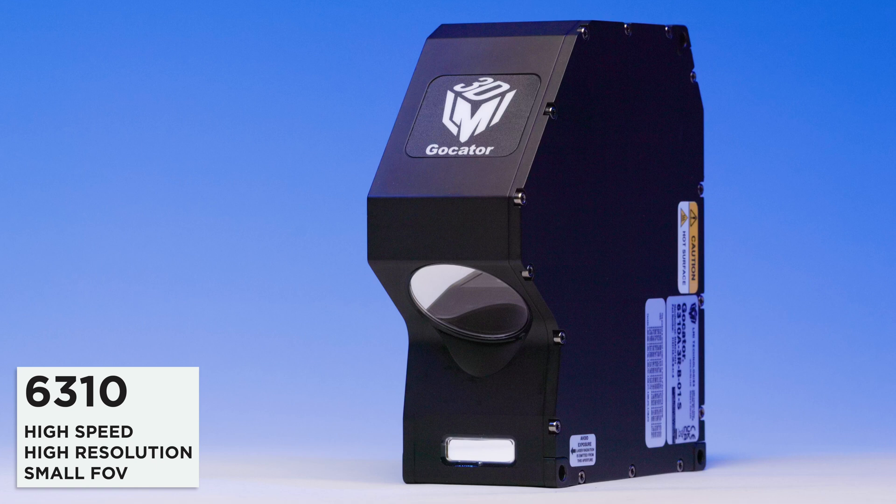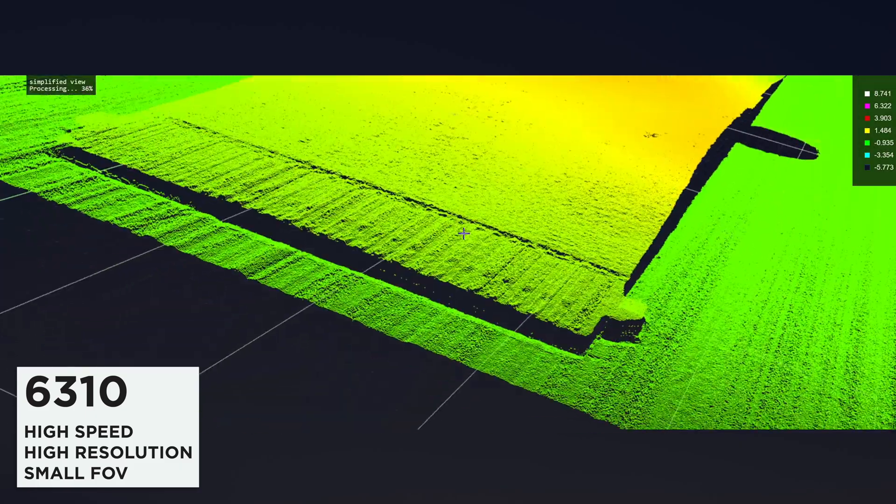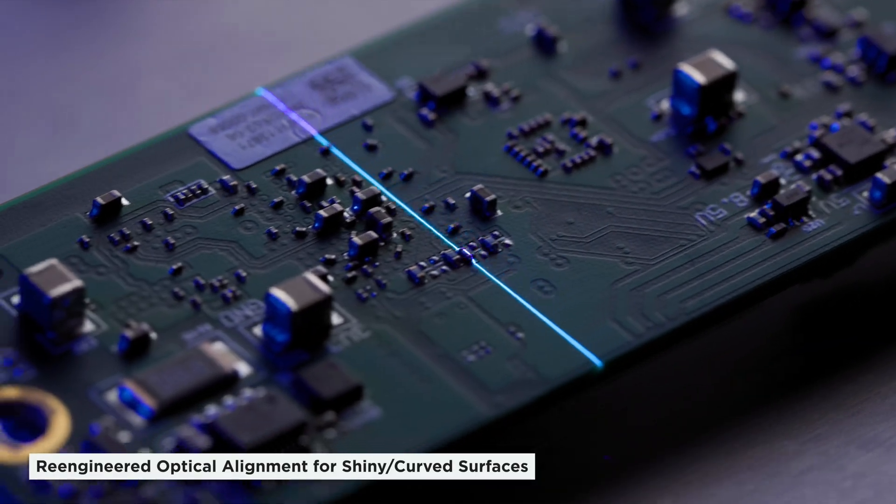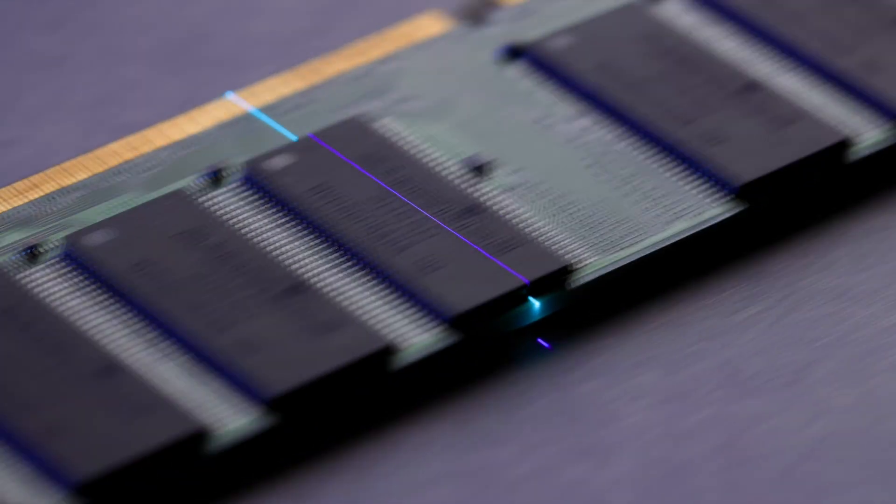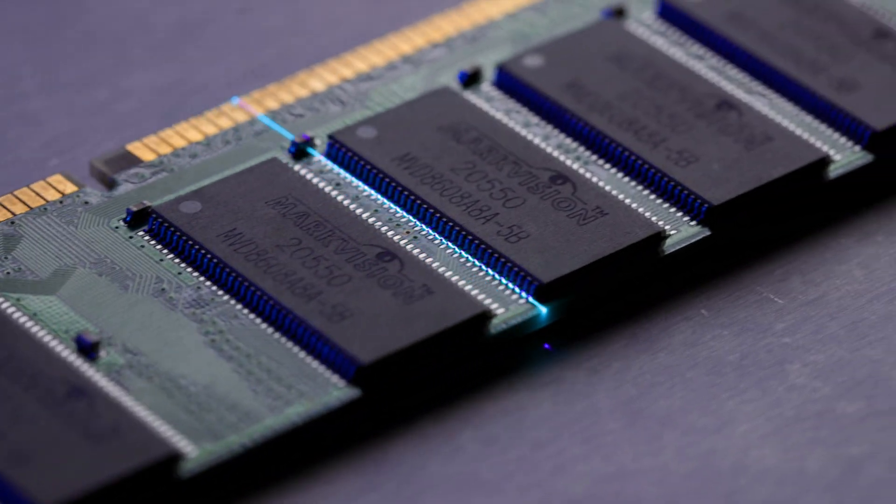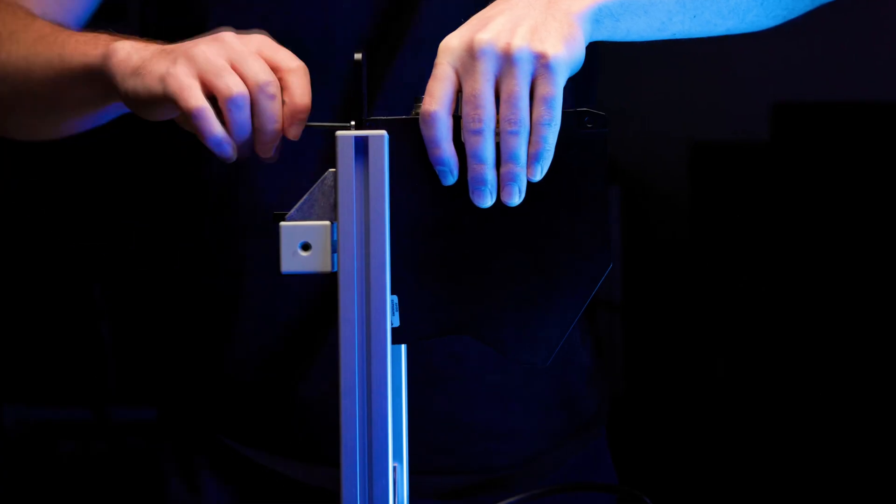The 6310 is built for speed and resolution on extremely small targets, detecting and measuring defects invisible to the eye. A re-engineered optical alignment approach optimizes laser-line quality to improve performance on curved, tilted and reflective surfaces.